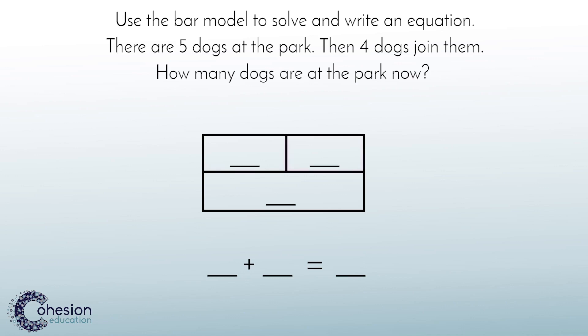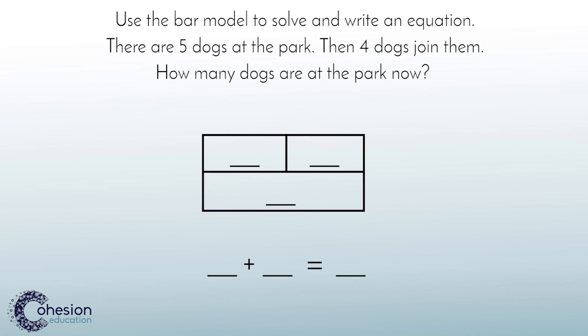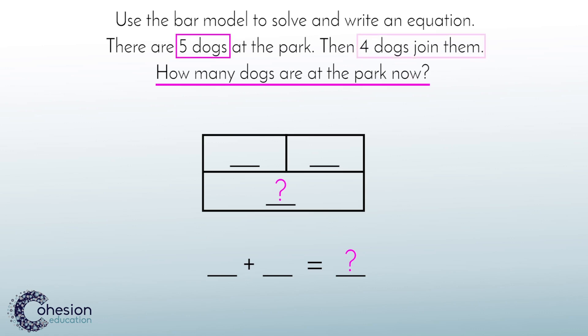The top part of the model displays the two parts or the two addends. The bottom is the whole or the total. To solve this problem, students will determine it is asking for the total number of dogs, so that is the unknown part of the model. Since first there are five dogs and four more join, those are the two parts. Students will fill in the model and use it to write the equation and solve. This is how students use a bar model to solve an addition problem when the two addends are known.